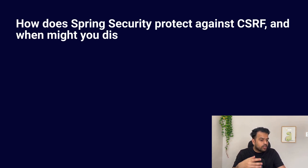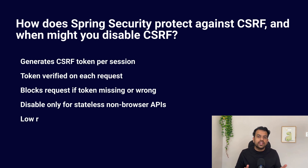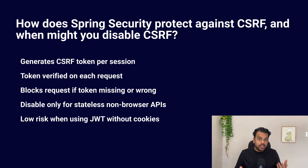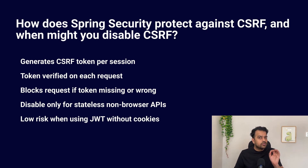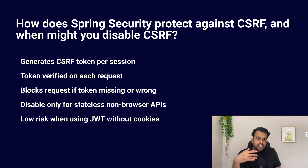The next question is: how does Spring Security protect against CSRF, and when do you have to disable CSRF? CSRF means fake requests sent from another website using your logged-in session. Spring Security generates a unique token per user session — this token is stored on the server and given to the client, and every request must send that token back in the header or form data. The server then verifies it; if the token is missing, the request is blocked. This protects browser-based applications very well.